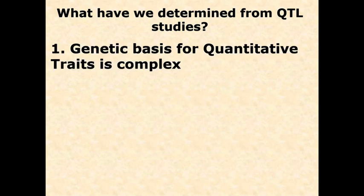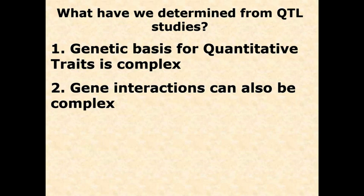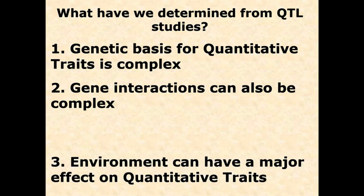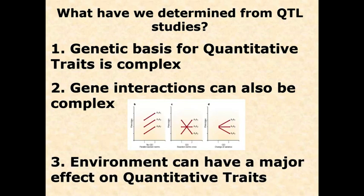From QTL studies, we determine that the genetic basis for quantitative traits is very complex, and gene interactions are complex too — we may need a meta-analysis to determine if certain results are dependent on one another. We also know the environment can have a major effect on quantitative traits like height. If you're malnourished or exposed to certain hormones or chemicals, you might not grow to the height your genetics programmed you to. Large data sets help filter out that environmental noise.